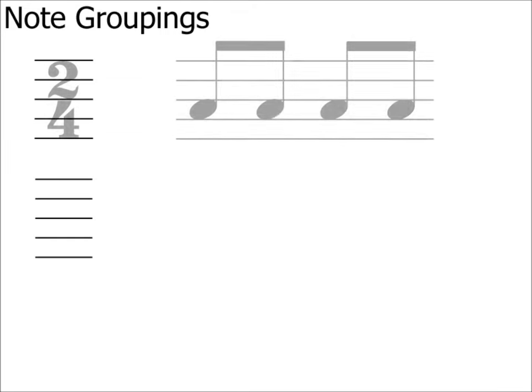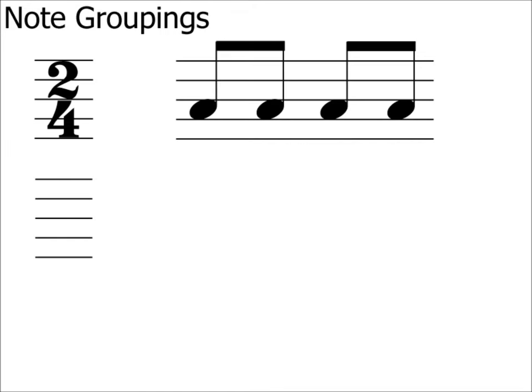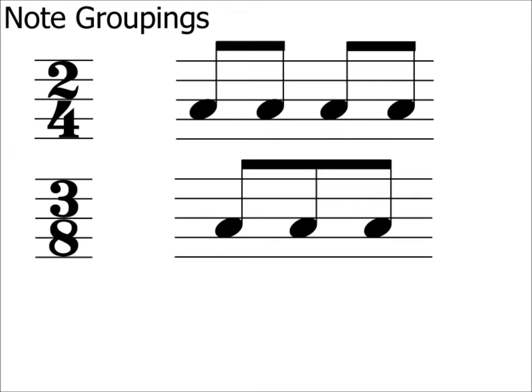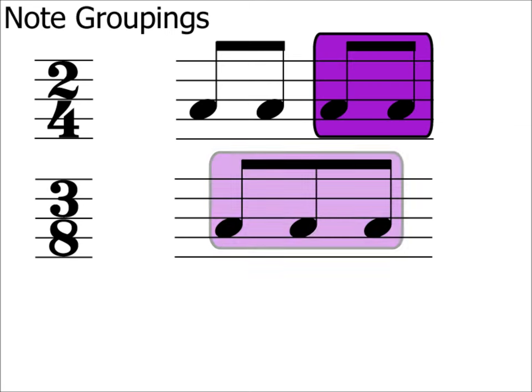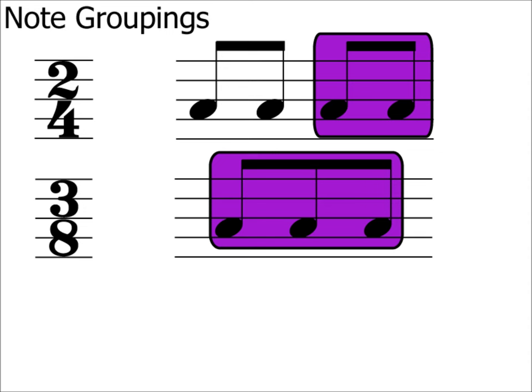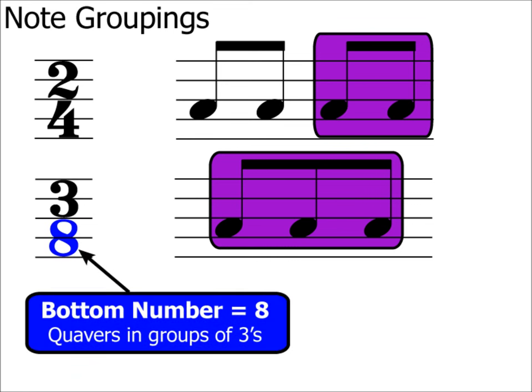Before we tackle some exam-type questions, there's something very important I need to point out. Here's a full bar of quavers in 2/4 and 3/8. Notice how in 2/4 the quavers are in groups of two, whereas in 3/8 they are in a group of three. As a rule of thumb, quavers in a time signature with an eight at the bottom are grouped together in threes. Do remember this rule.